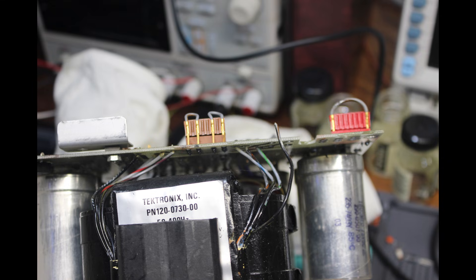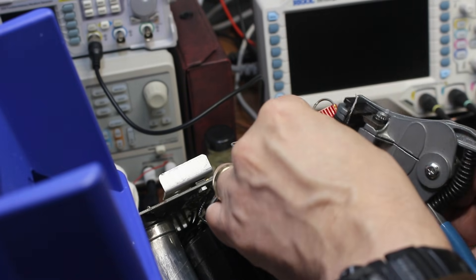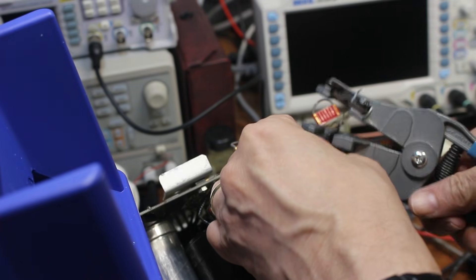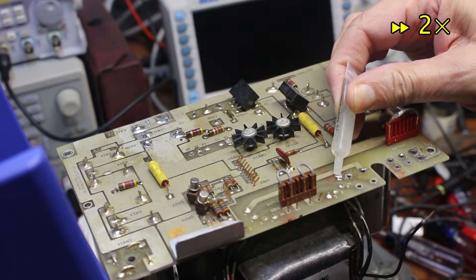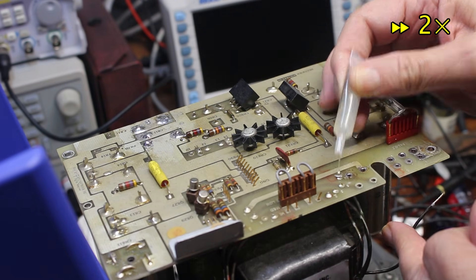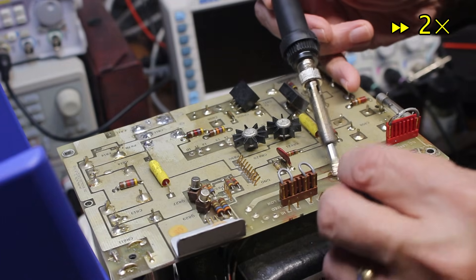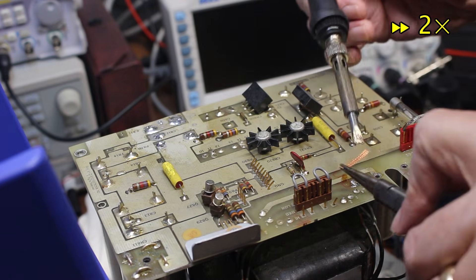I also discovered that all the handling had broken one lead on the power transformer. So I stripped it back, and cleaned out the hole in the PC board with the same technique of adding flux, applying low-temperature solder, and mopping up with solder wick.